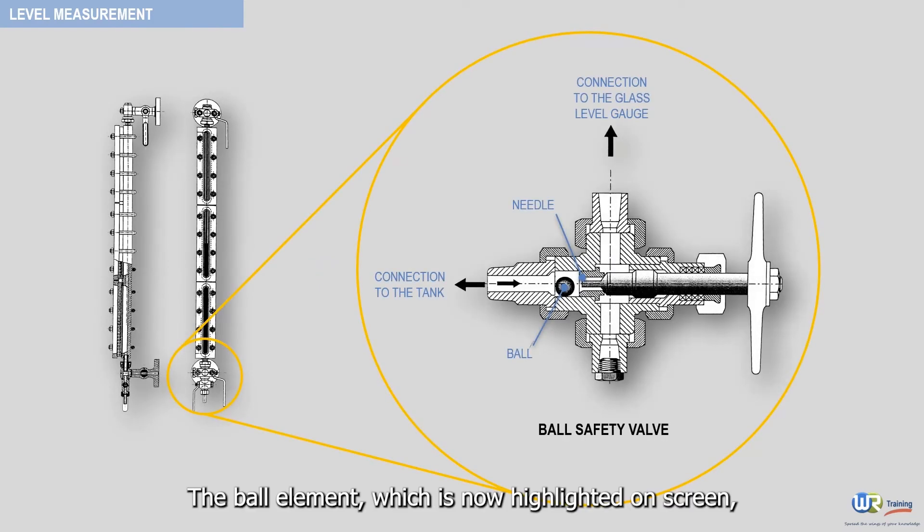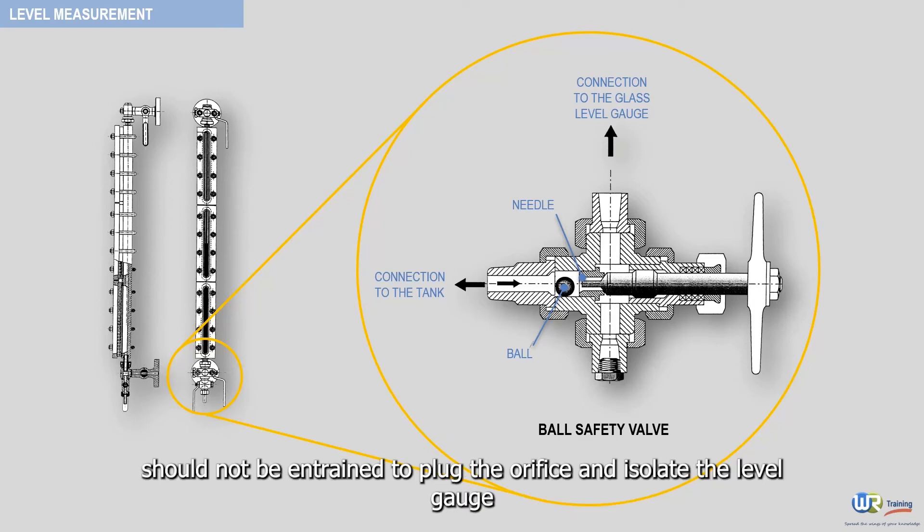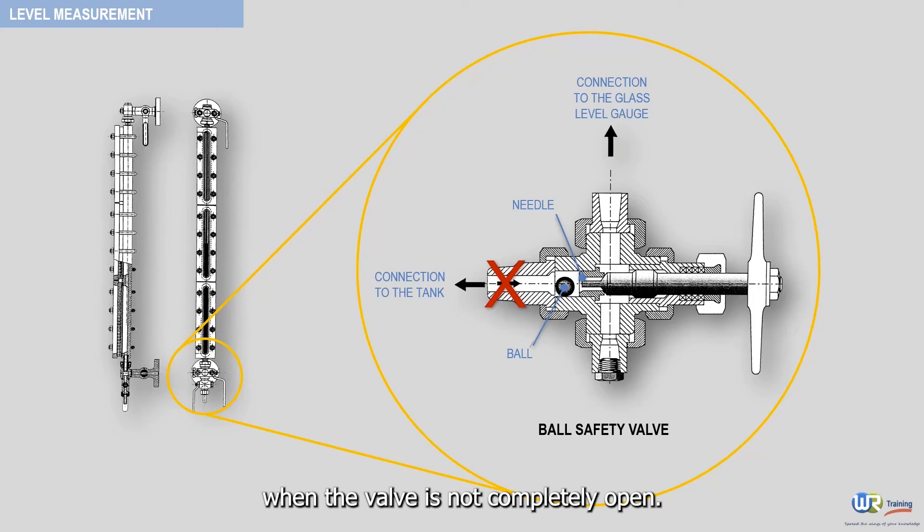The ball element, which is now highlighted on screen, should not be entrained to plug the orifice and isolate the level gauge when the valve is not completely open.